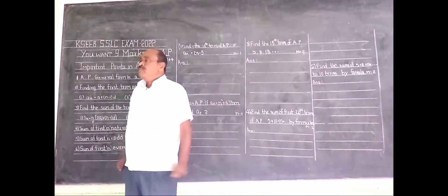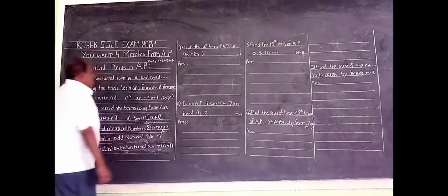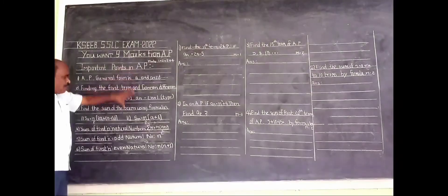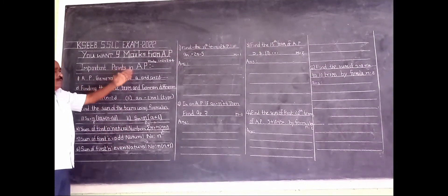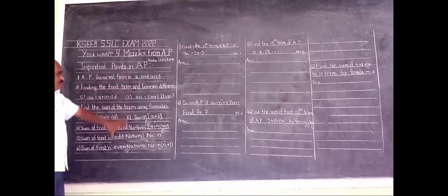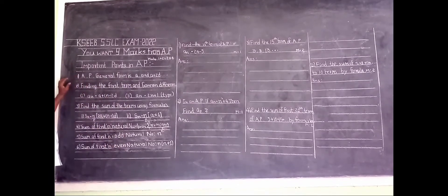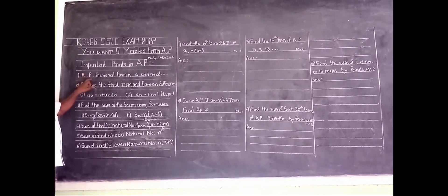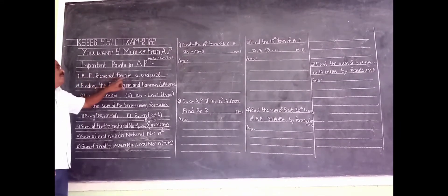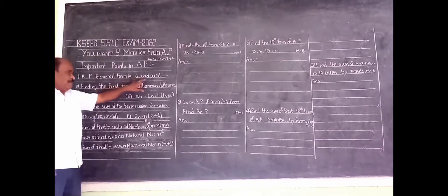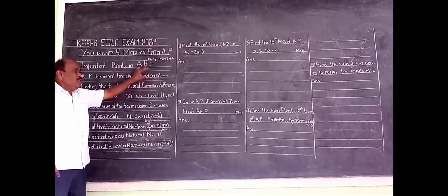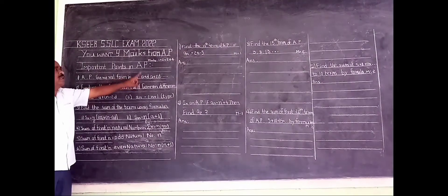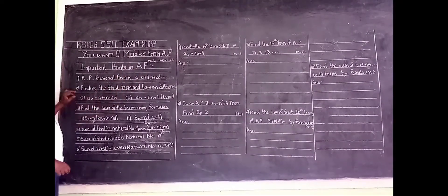See, my dear children, we have developed important points in arithmetic progression. From these points only, you will get 1 mark. First, let us learn the general form of AP — that is, arithmetic progression. From this one point, they may ask one question.